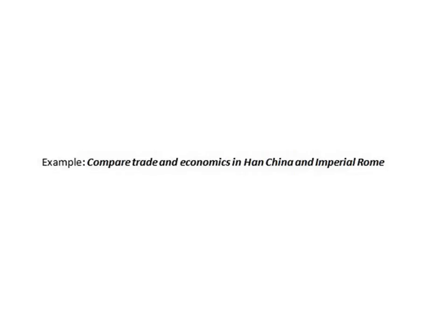The next thing you have to remember is to read the prompt very carefully, noting any keywords. Look specifically at the two places being compared and the historical factor being compared. In this situation we're looking at Han China and Imperial Rome during the classical era, and we're looking at trade and economics. So trade and economics is our topic — we can underline it, circle it, do anything we need to remind us of what we're focusing on.